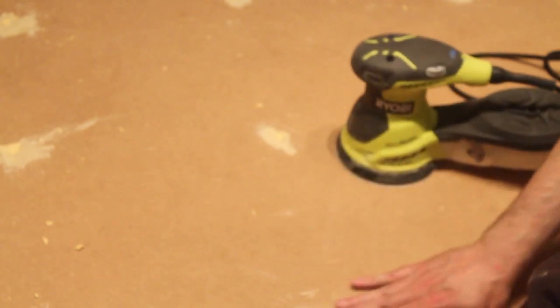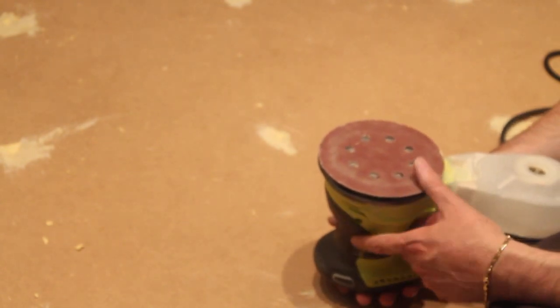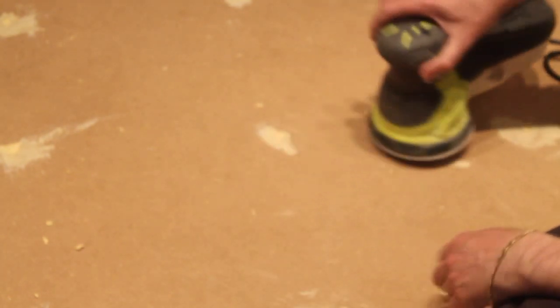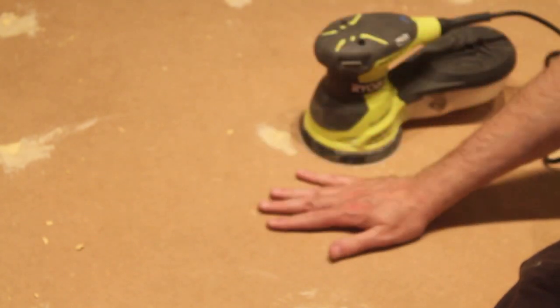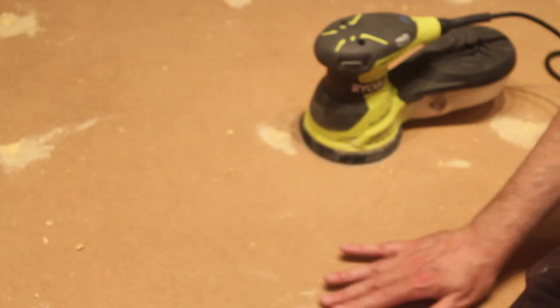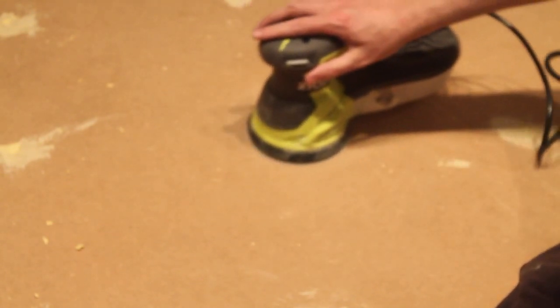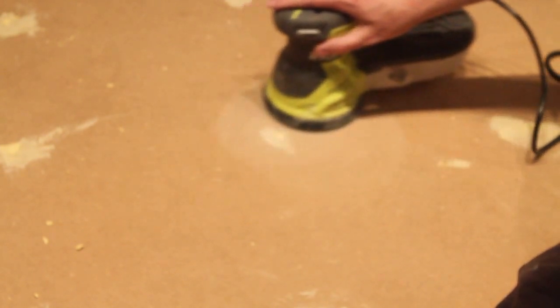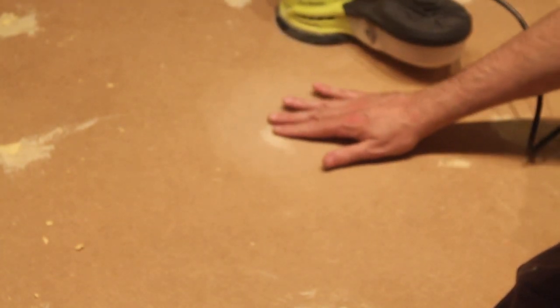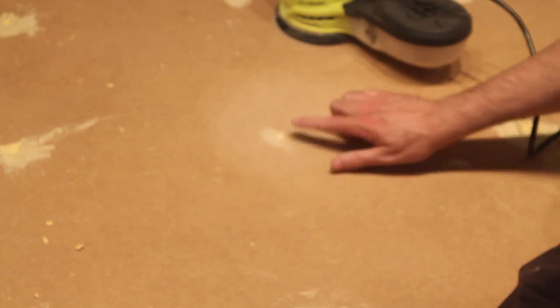Now that the filler has dried, I'm going to use an orbital sander. I'm using 240 grit sandpaper. This should be more than enough just to give it a good sand. Now you don't need to press. Basically the weight of the machine is probably already enough. You don't want to deform the MDF. So just enough to remove the extra and make it nice and smooth, and then you can start painting. This is perfect. Can feel absolutely nothing. The hole is completely filled. Once this is painted you won't see nothing.